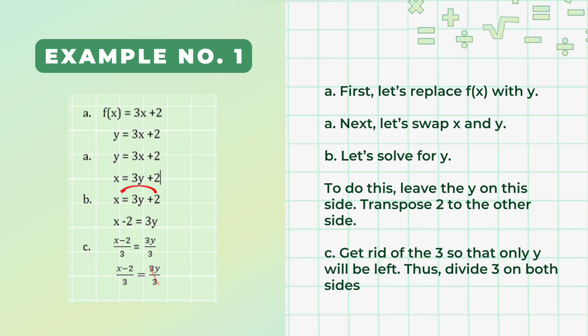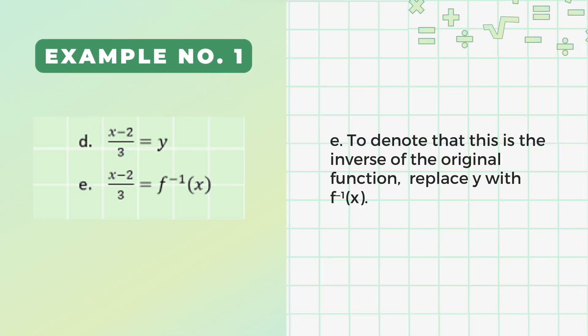As you can see, 3 is added on the right side. When we transpose it, we will subtract it on the left side, from positive 2 to negative 2. We still have to get rid of the numerical coefficient of y, which is 3, so that only y will be left. Thus, we will divide by 3 on both sides. To denote that this is an inverse of the original function, we must replace y with f inverse of x. This is now the final answer.